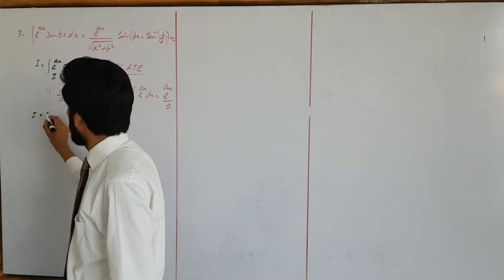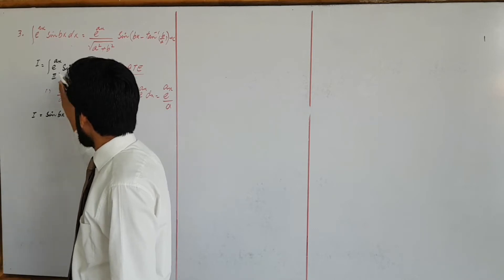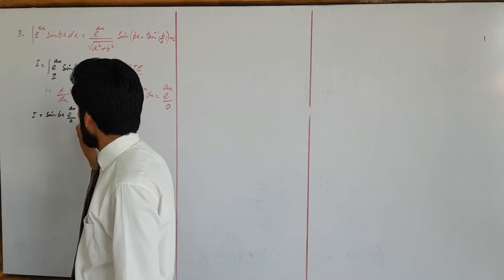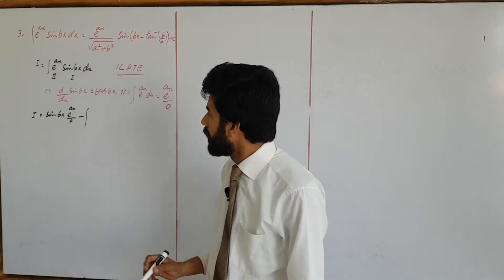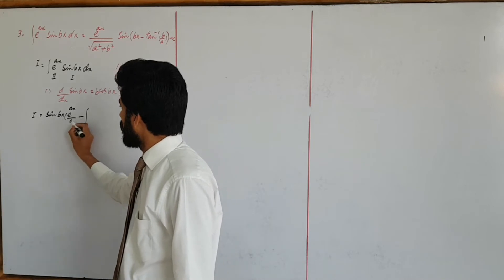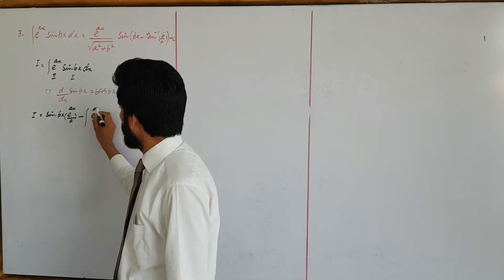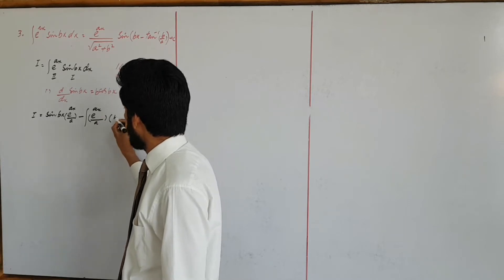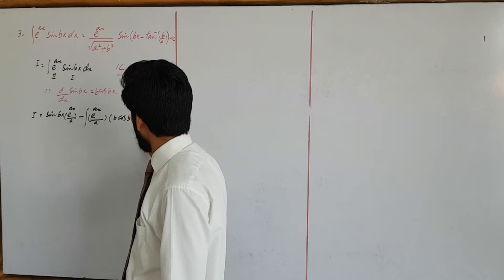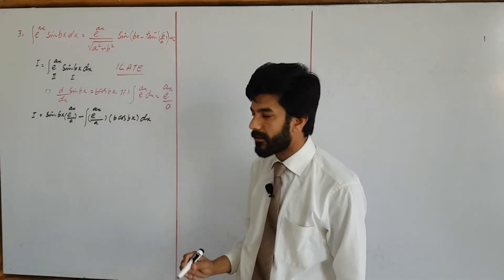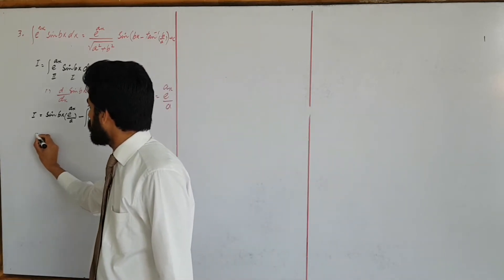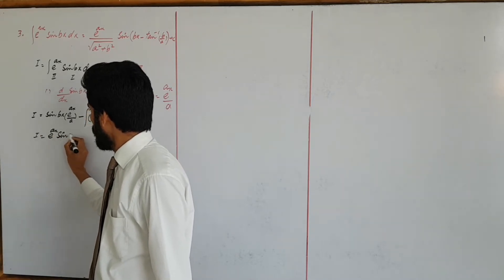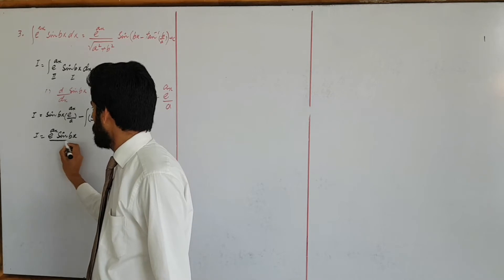Integrating by parts apply किया। First function same है — sin vx। Second function की integration है e to the power ax upon a। Then minus integral of: integration of second यानि e to the power ax upon a, और derivative of first यानि v cos vx, dx।